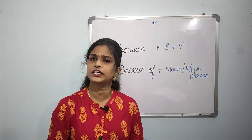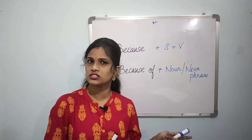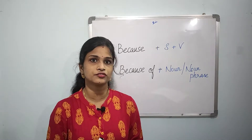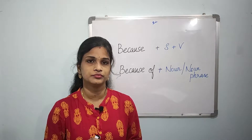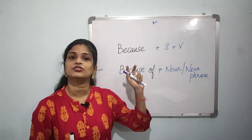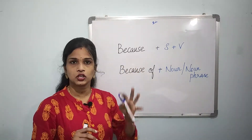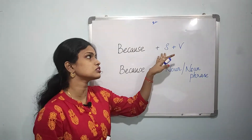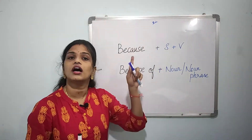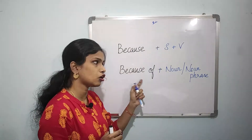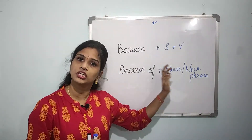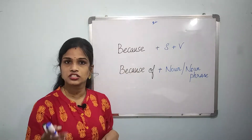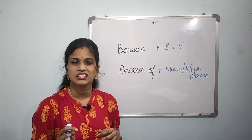Because, because of. How do we use because and because of? When we use 'because,' it is followed by a subject and a verb — that means 'because' is a conjunction. When we use 'because of,' it is followed by a noun — that means 'because of' is a preposition.